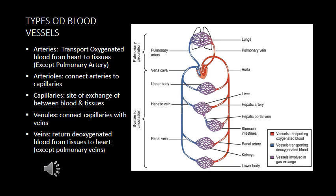There are five classes of blood vessels, namely arteries, arterioles, capillaries, venules, and veins.